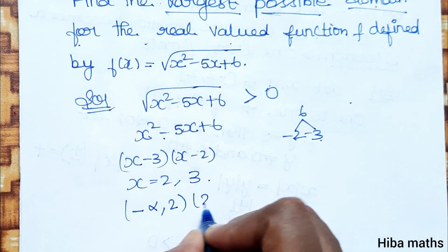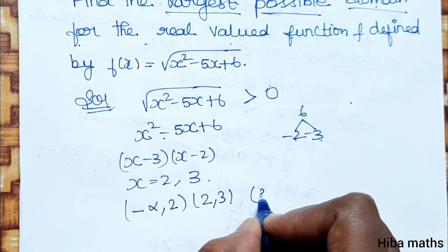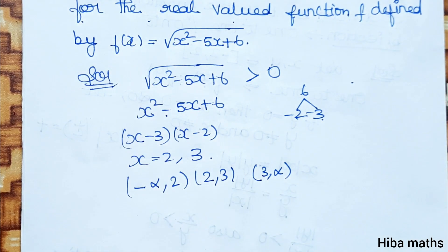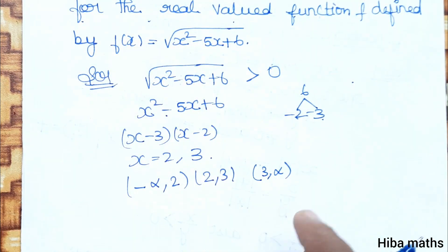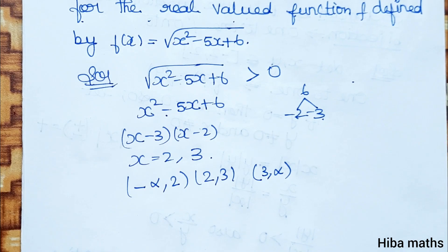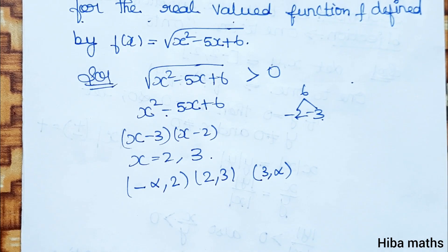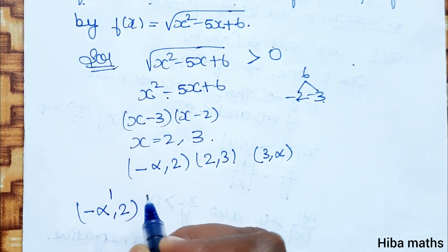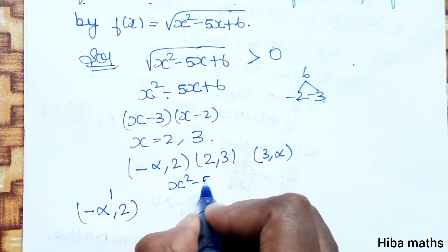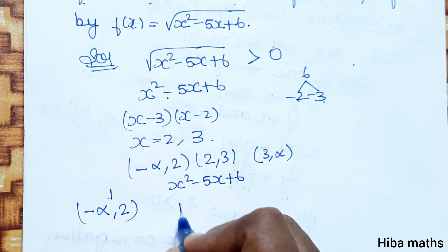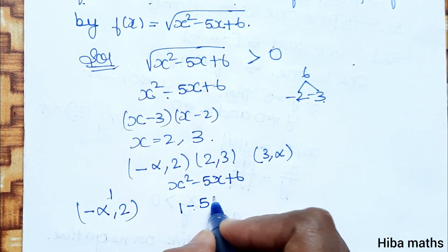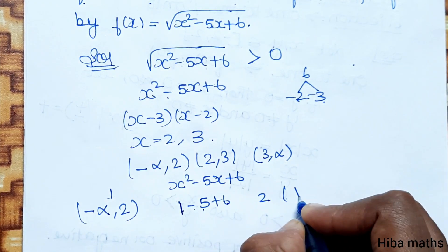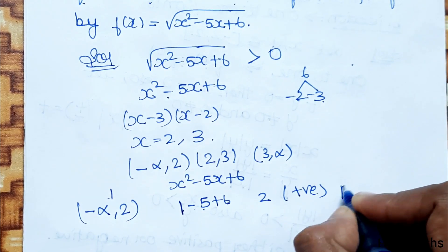The limits we consider are: minus infinity to 2, 2 to 3, and 3 to infinity. We will add a number in each interval and check whether the expression x squared minus 5x plus 6 is positive or negative. In the interval minus infinity to 2, we substitute x equals 1: 1 squared minus 5 times 1 plus 6 equals 1 minus 5 plus 6 equals 2, which is positive.